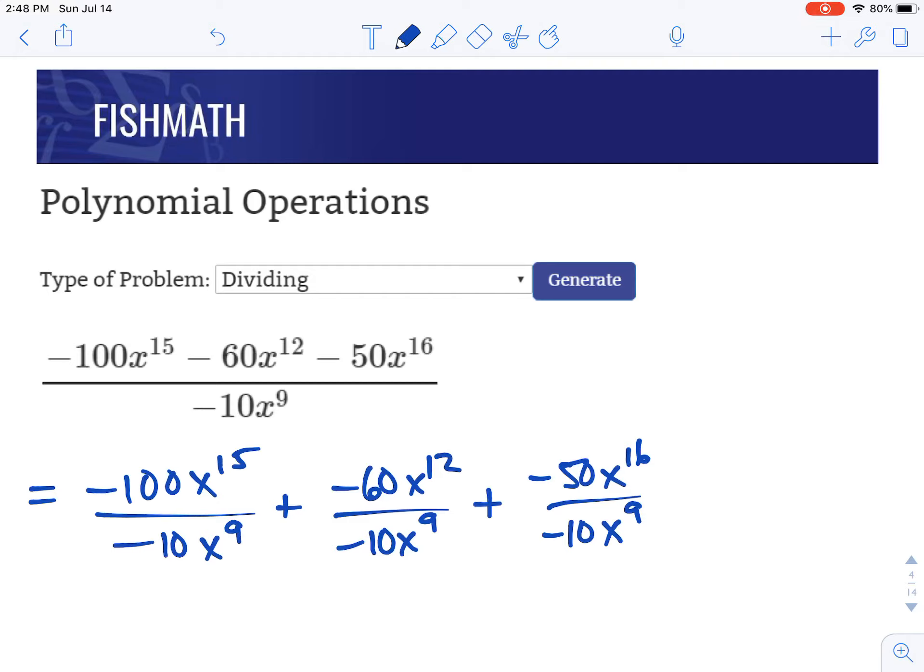So we'll do the numbers first. This would be positive 10. Then we're going to subtract our exponents. So x to the 6th here would be the power of x because 15 minus 9 is 6. And then plus, again, divide the numbers first. You get 6. And then subtract your exponents. x to the 3rd plus, divide the numbers. You get 5. Subtract the exponents. You get x to the, oh, that's not the 5th. That would be the 7th, 16 minus 9 there for the exponent, which would be 7. That's how we do division when it's written like a fraction.